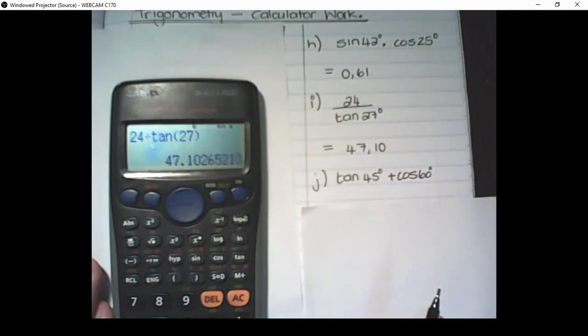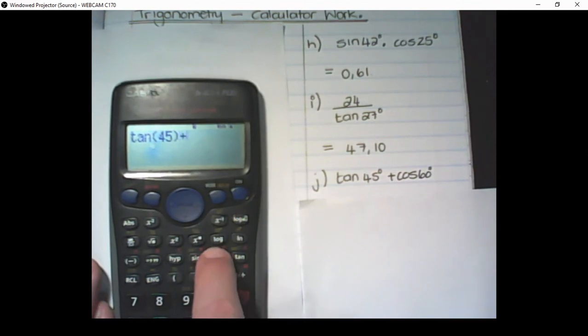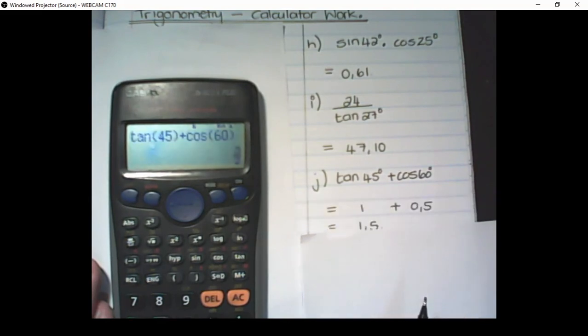And in our last example we are going to add up the trig ratios. So we have the tan of 45. Close the bracket. Plus cos of 60. Close the bracket. That is equal to 1 and a half.